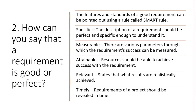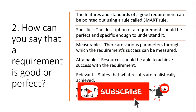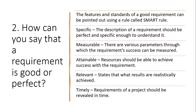Question 2: How can you say that a requirement is good or perfect? The features and standards of a good requirement can be pointed out using a rule called the SMART rule: Specific — the description of a requirement should be perfect and specific enough to understand it; Measurable — there are various parameters through which the requirement's success can be measured; Attainable — resources should be able to achieve success with the requirement; Relevant — states what results are realistically achieved; Timely — requirements of a project should be revealed in time.